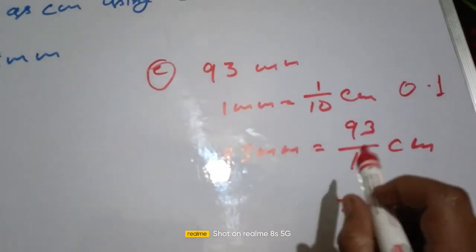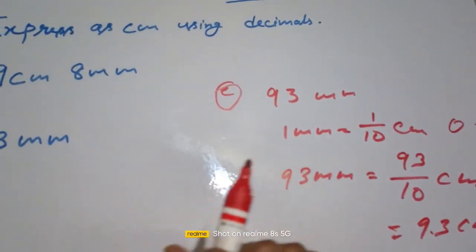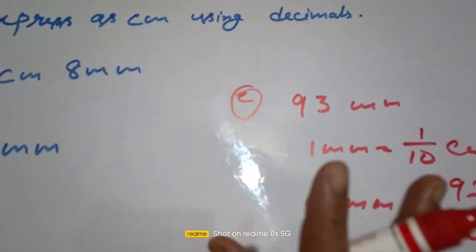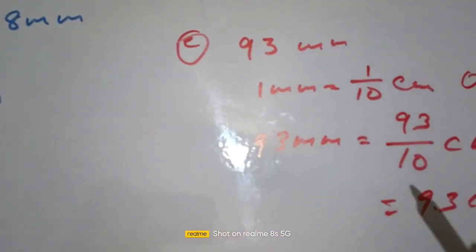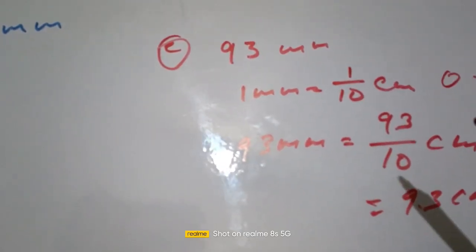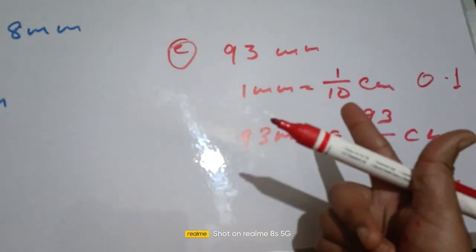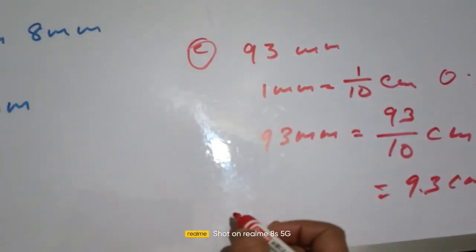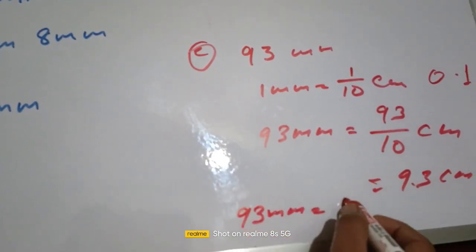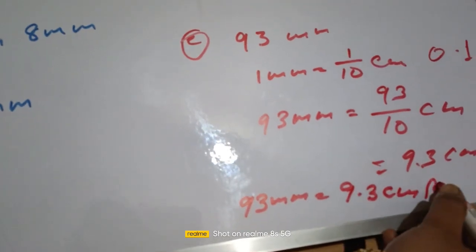We write 9.3 because we learned earlier that if there is no decimal point, we place the point to get the correct decimal form. Moving the decimal point gives us 9.3 cm. This is our answer.